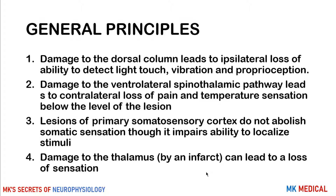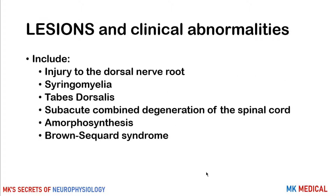Lesions affecting the primary somatosensory cortex do not necessarily abolish somatic sensation, though they may impair the ability to localize stimuli. Damage to the thalamus by an infarct — death of tissue due to loss of blood supply — can lead to loss of sensation, since the thalamus is the relay center for both motor and sensory information. The lesions we'll cover include injury to the dorsal nerve root, syringomyelia, tabes dorsalis, subacute combined degeneration of the spinal cord, amorphosynthesis, and Brown-Séquard syndrome.